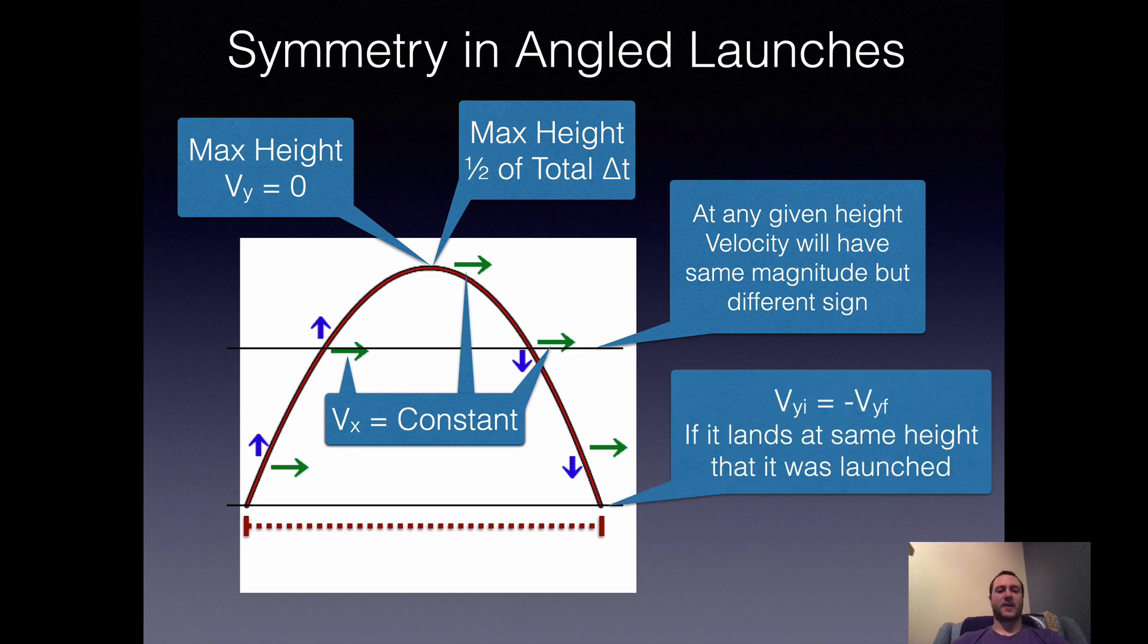Another key thing: as long as the launch height matches the point that it lands at, the initial vertical velocity will be equal and opposite to the final vertical velocity. You're at the same height, and when you're at the same height, your speeds are going to be the same, just in opposite directions, which is why one has to be negative and one is going to be positive.